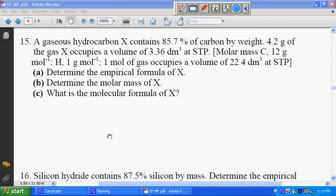Let's look at question 15. A gaseous hydrocarbon X contains 85.7% of carbon by weight. 4.2 grams of the gas X occupies a volume of 3.36 decimeter cubed at STP.